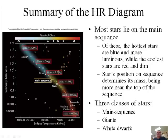Let's just summarize this: most stars lie on the main sequence - remember that was 90%. Of these, the hottest stars are blue and more luminous, that means brighter, while the coolest stars are red and dim.